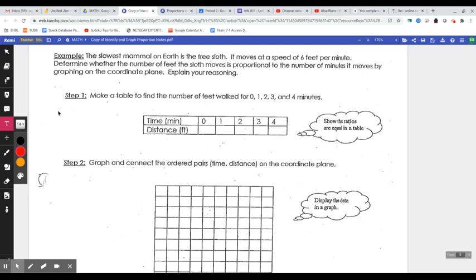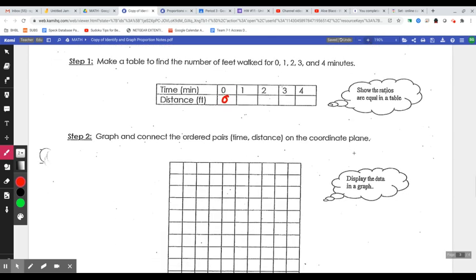And let's see if he's going six feet every minute, right? That's what it says. Yes, six feet per minute here. Okay, so at zero minutes he has gone zero feet. I'm going to zoom in some more. After one minute he's gone six feet, then 12, then 18, then 24.